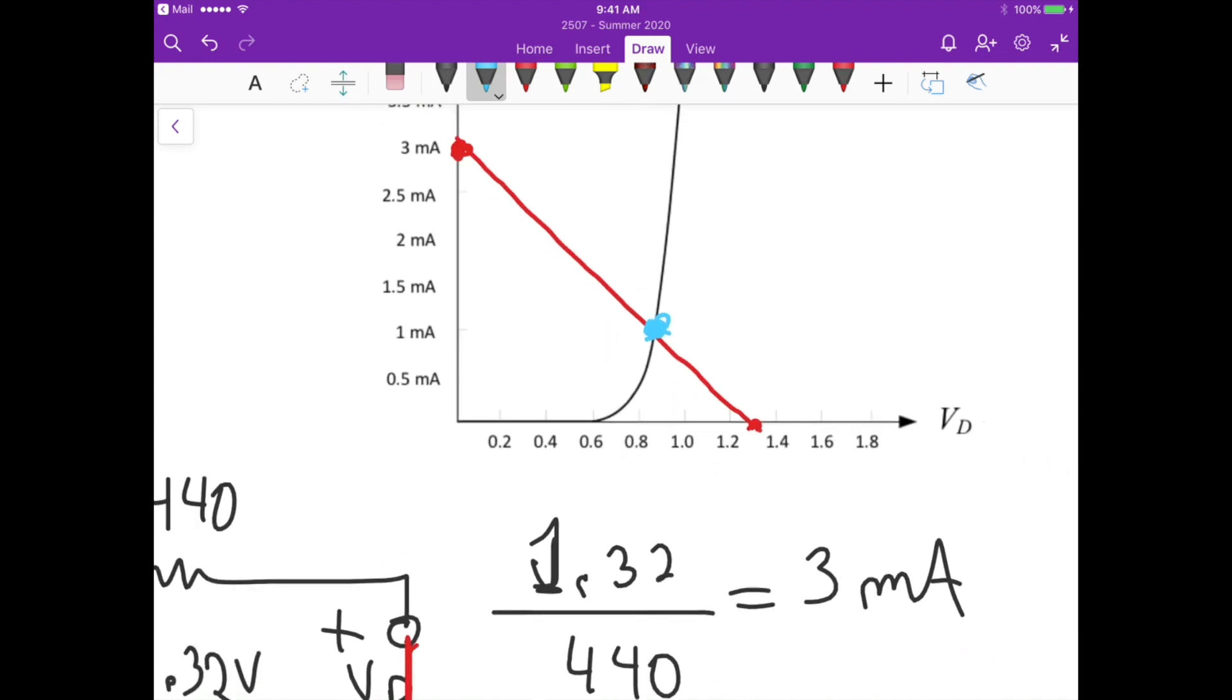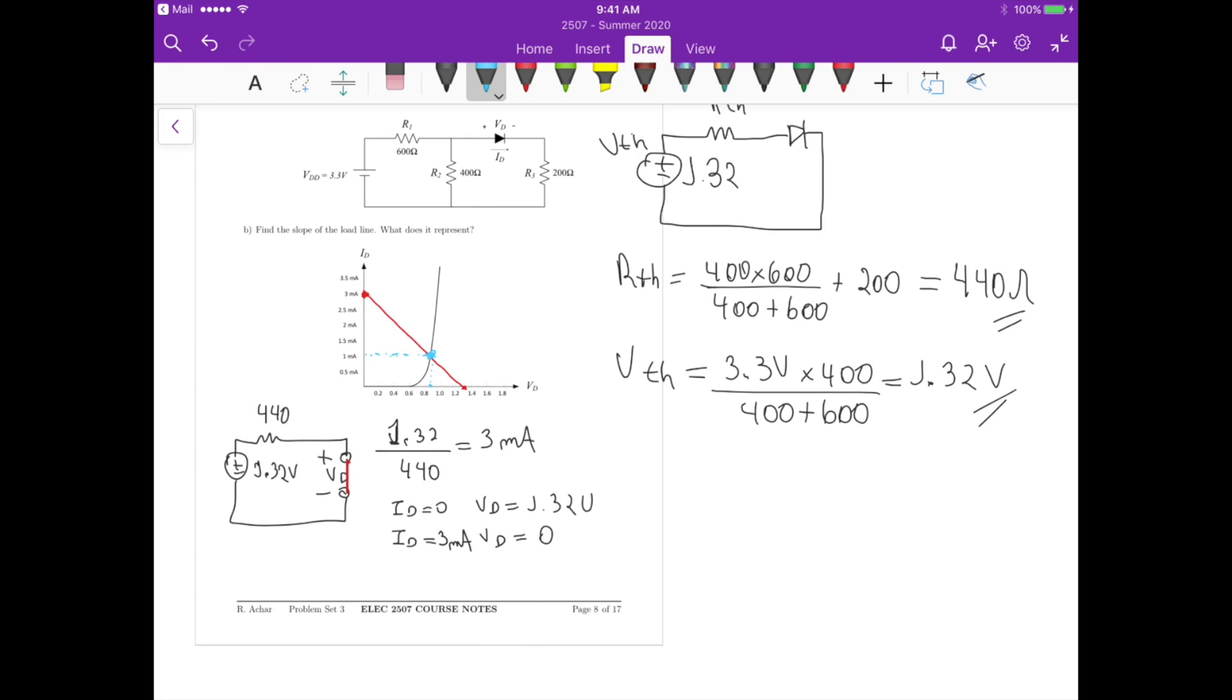Now, if we zoom in here, that basically gives us a voltage that's around 0.88 and a current that is 1 milliampere here. So the quiescent point, the operating point is IQ equals to 1 milliampere and VQ equals to 0.88 volts. So we are done for part A.